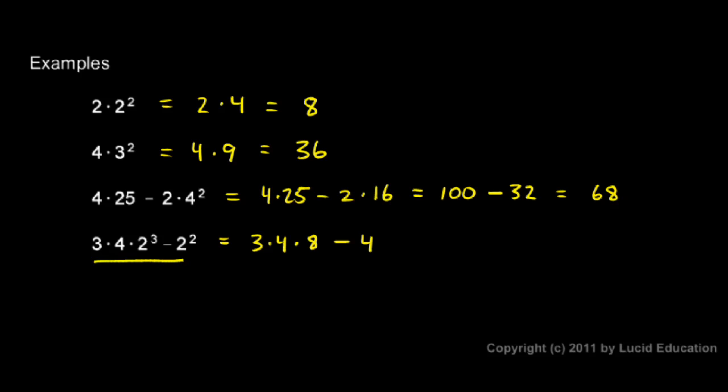So I've just taken this problem and rewritten it with these 2 exponents evaluated. And now it's a little bit simpler problem. Now the rules say I need to do the multiplication here left to right before I do this subtraction right here. So 3 times 4 is 12, and 12 times 8 is 96. And then I have this minus 4.